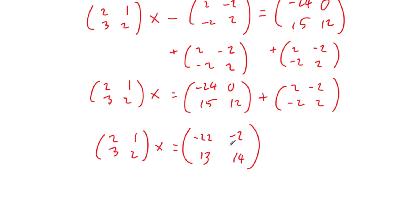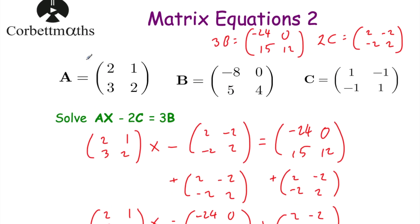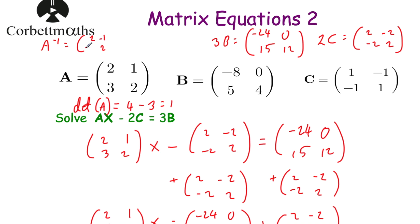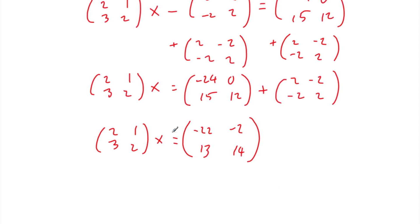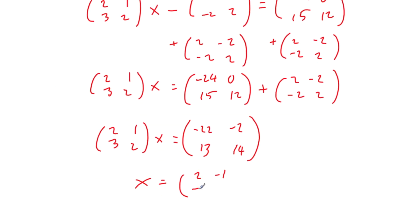We now have the equation in the form AX equals a matrix, so we multiply both sides by the inverse of A. The determinant of A is 2 times 2 minus 3 times 1, which is 4 minus 3, equal to 1. So the inverse of A equals 1 over 1 times 2, negative 1, negative 3, 2, which is just 2, negative 1, negative 3, 2. Multiplying both sides by the inverse of A: X equals 2, negative 1, negative 3, 2 times negative 22, negative 2, 13, 14.